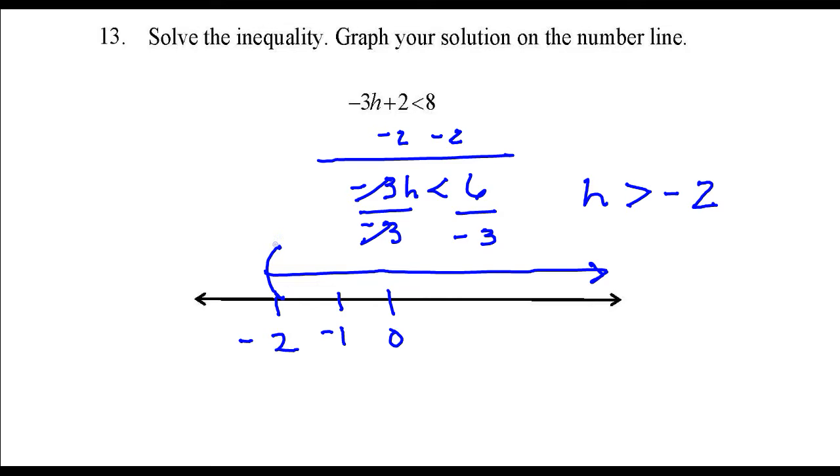If you notice, I used a parenthesis here instead of a square bracket. If this said h is greater than or equal to negative 2, then I would have used a square bracket because that would include the negative 2, but in this case it does not include negative 2.